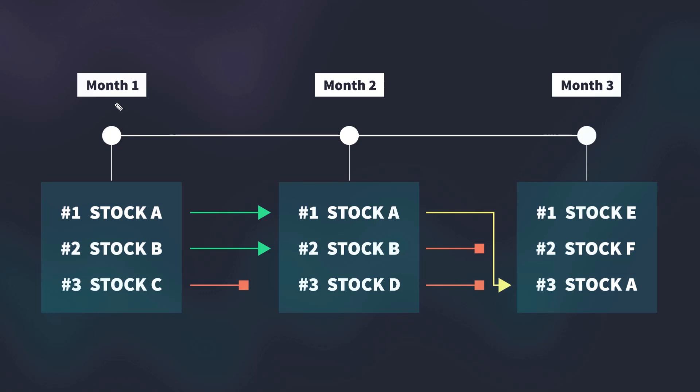Momentum strategies generally do not use any indicators to open and close their positions. Instead, they hold a number of different stocks at any given time and simply rotate these stocks based on whether they show strong momentum or not. This kind of approach is commonly called a rotational momentum strategy. Once a month, this strategy takes all stocks it's applied on — let's say all stocks that belong to the NASDAQ 100 or S&P 100 index — and ranks them based on a certain formula, like their annual return, to measure momentum. Obviously, the higher the stock's annual return, the higher the deemed momentum.